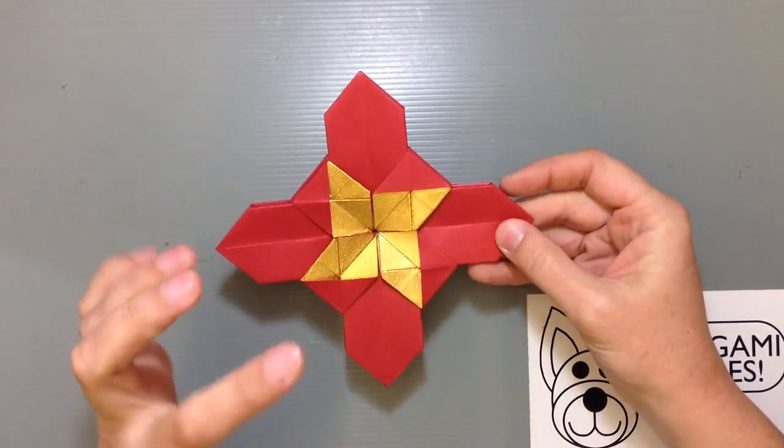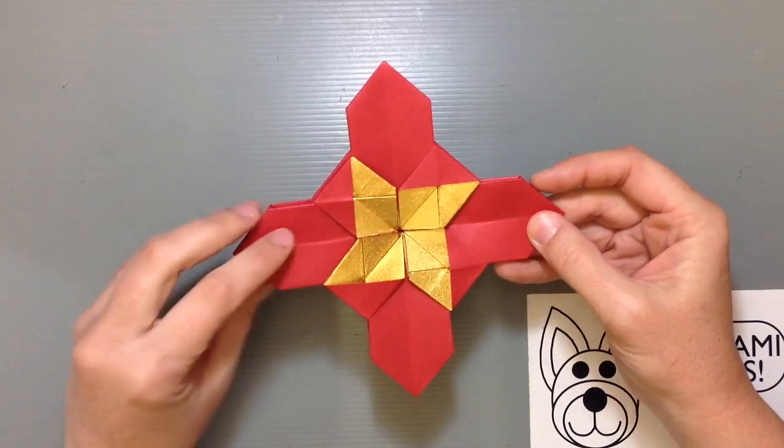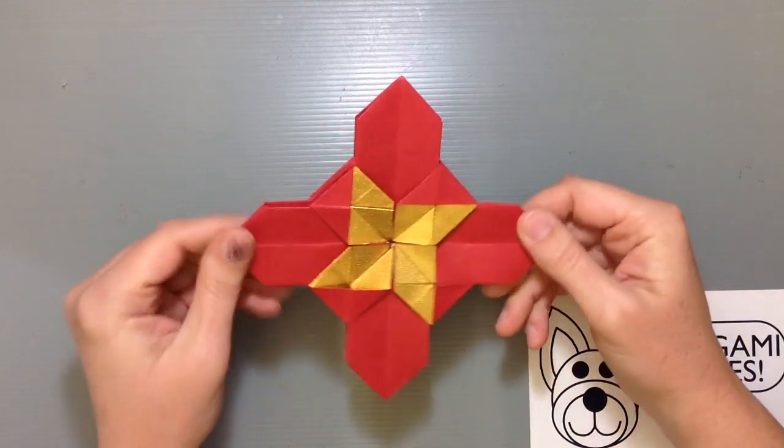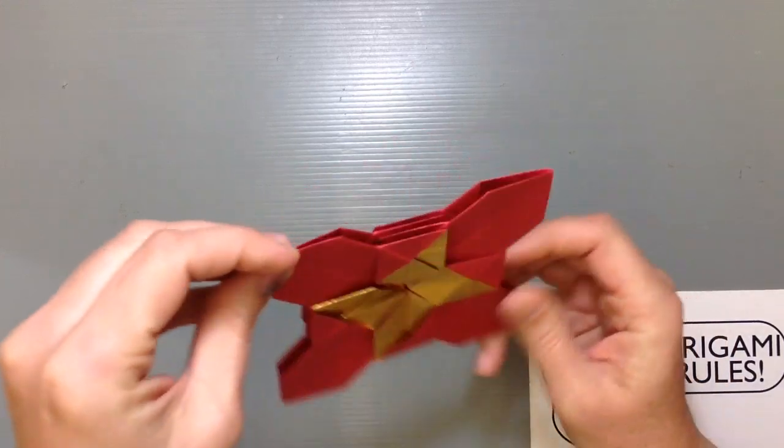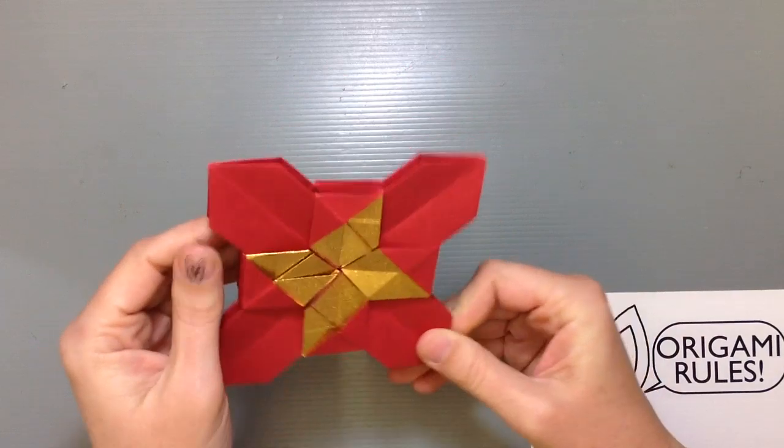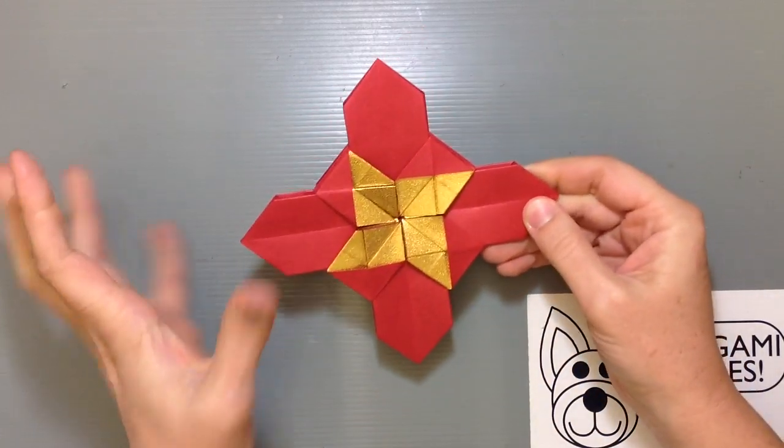It obviously looks really cool if you can use double-sided paper. I used some of that paper that's got a nice gold with a red. It creates a cool finish and it's the same on front and back. So it makes it really nice if you wanted to hang it in a window or something, you can see from the back and inside the house or in a mobile. So I'll show you guys how to put it all together.